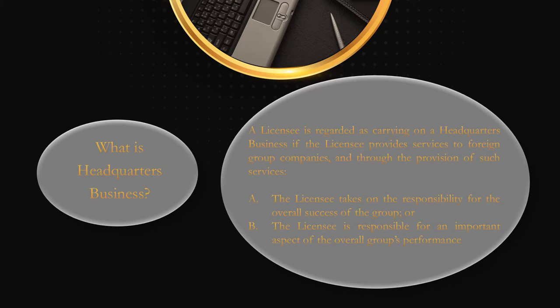Now let's understand this definition in more detail. As per the definition, a licensee is considered as carrying on a headquarter business if they are providing services to foreign group companies. Group companies means connected people. The definition of connected person as per the Economic Substance Regulation is a natural or juridical person who is related to one or more natural or juridical persons, and that relation can be through direct or indirect ownership, control, or common control.